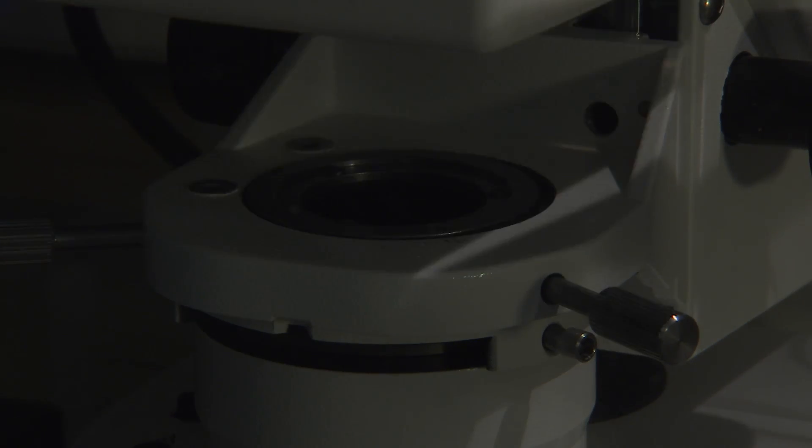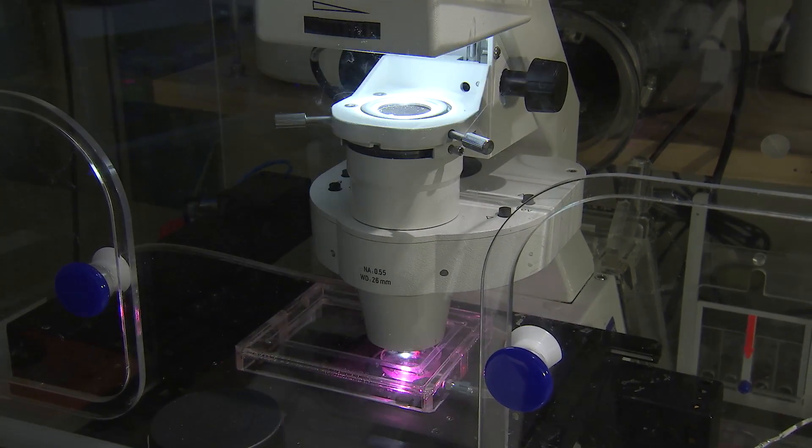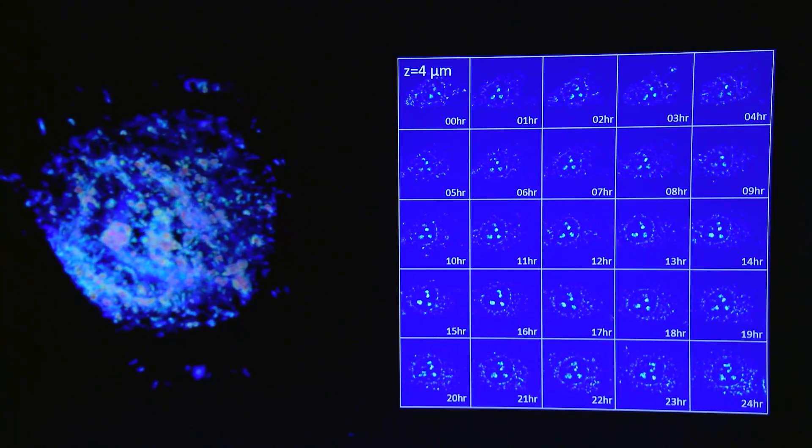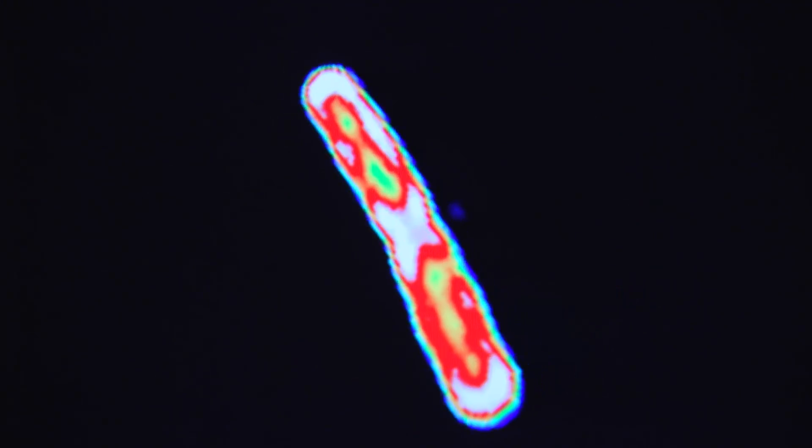The technique uses a conventional microscope and white light, the kind we can see. Some of the light passes through the cells and some scatters. A computer then collects data from all the light and makes a 3D image. Scientists then add color to see different structures within the cells.